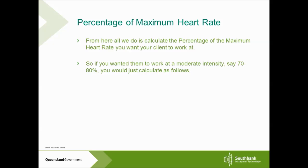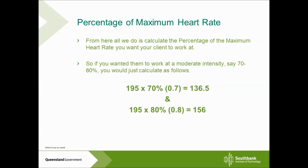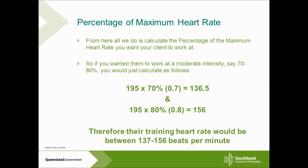From here, we take that maximum heart rate and multiply it by the percentage at which you want your client to work. Say you wanted them to work at a moderate intensity, between 70 to 80 percent. We multiply the maximum heart rate by the chosen percentage — 195 multiplied by 70% gives us 136.5, and multiplying by 80% gives us 156 beats per minute. So we would tell them to keep their heart rate between 137 to 156 beats per minute.